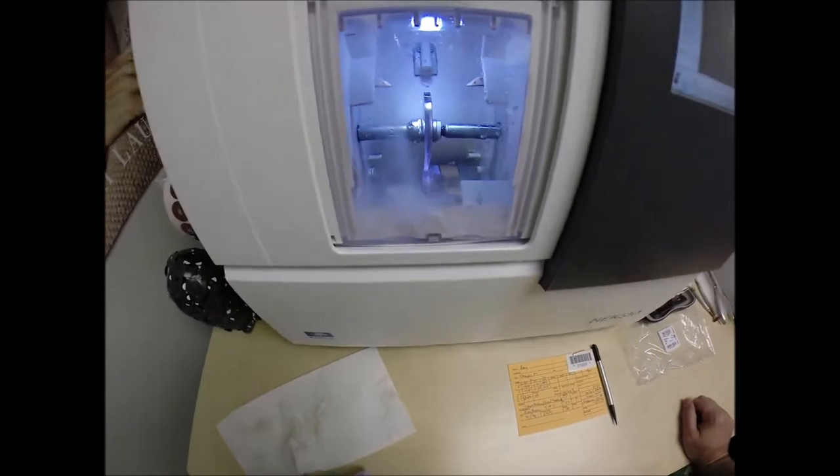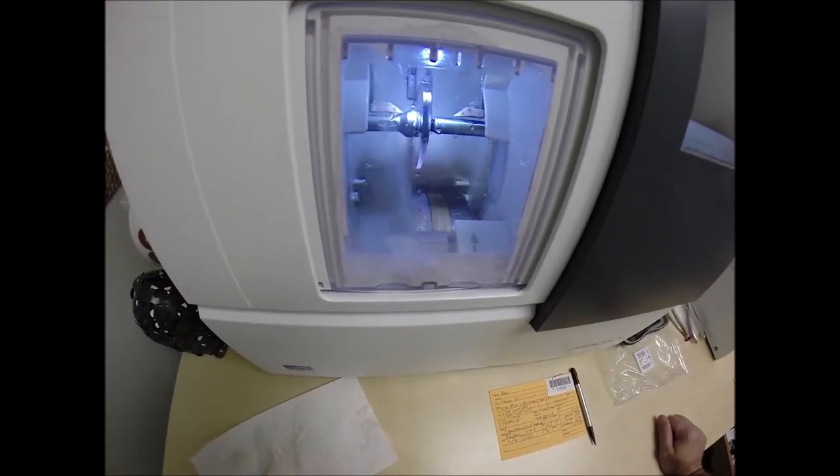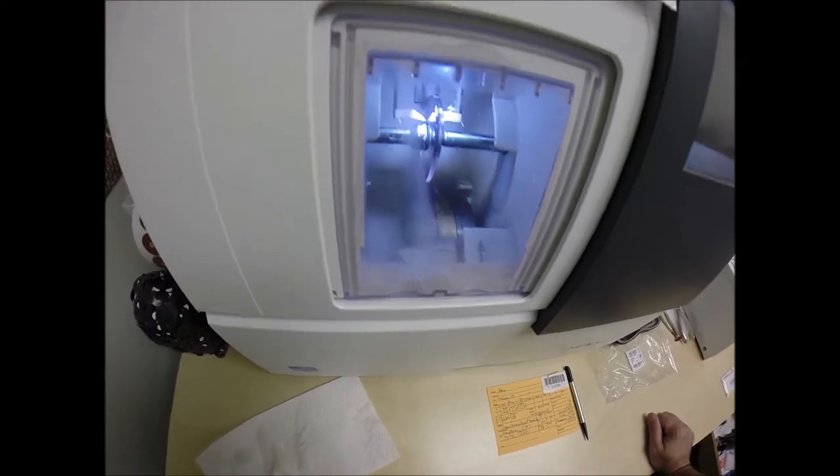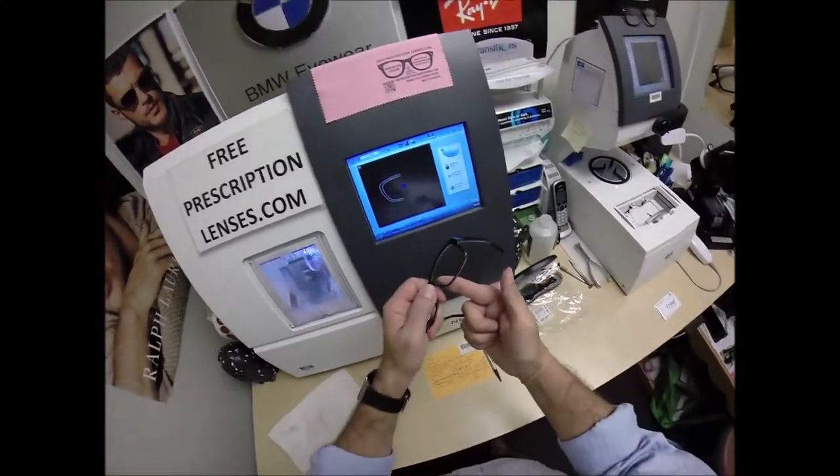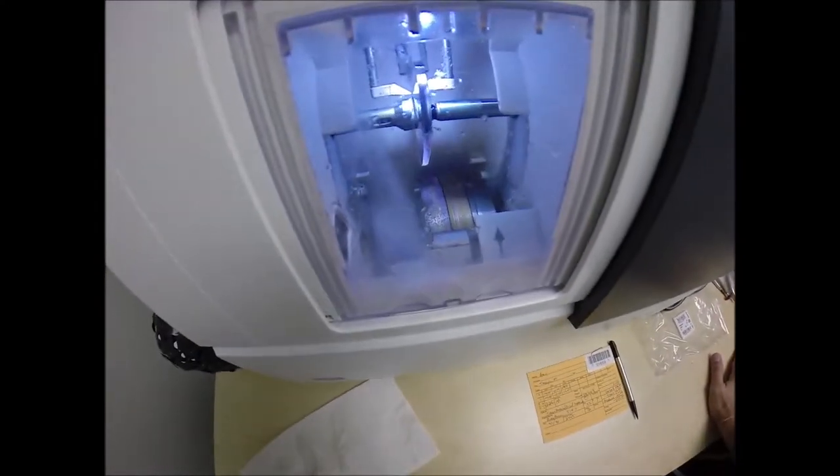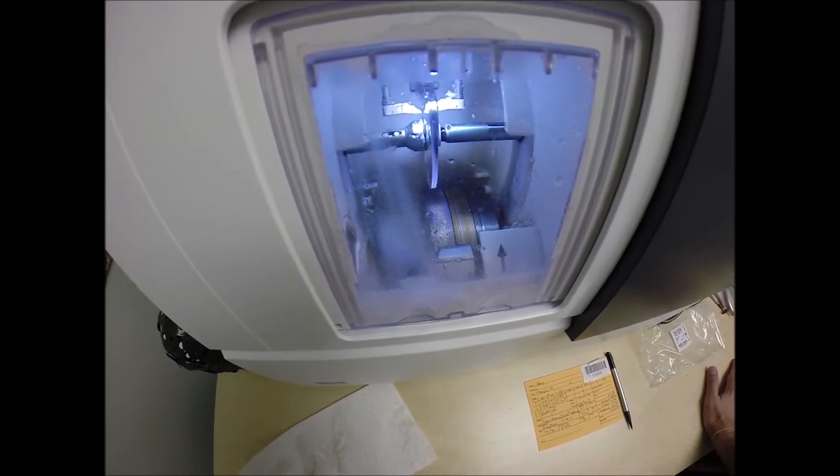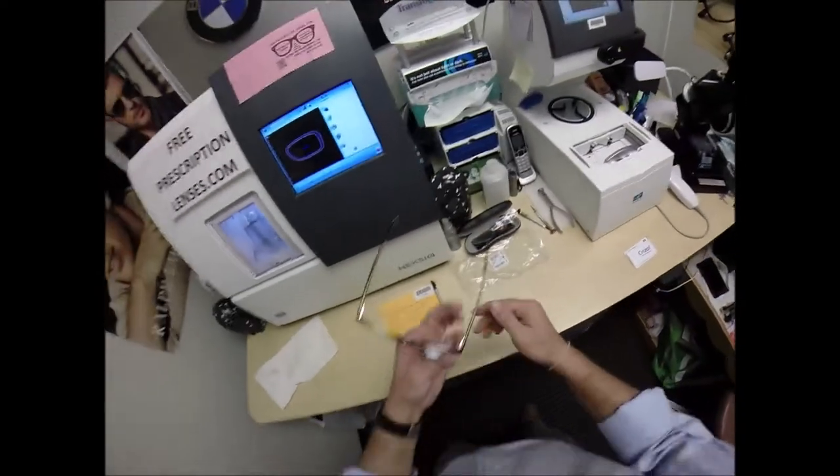The door closes, the clamp shuts, the lens is going to go around and again be traced by the two white styluses, making sure that it's large enough to fit into the left side of the frame. And you can see as it's going around, tracing the shape of the left side. And just like before, measuring the thickness of the lens at every point to know exactly and precisely where to place the bevel. So you have the least amount of edge thickness showing.